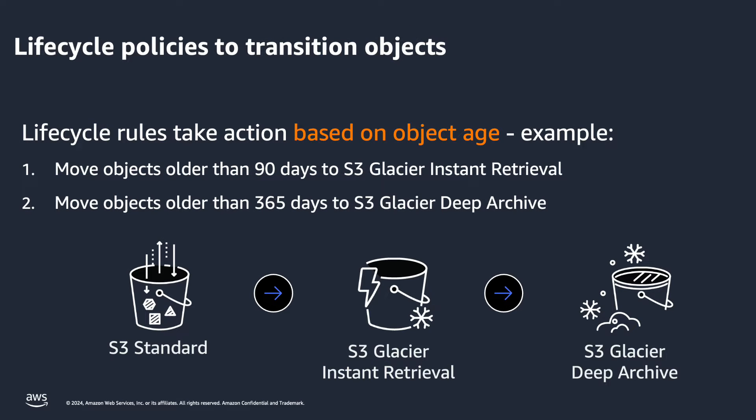In this example, we have a workload where objects are accessed several times a month for the first 3 months, and then not as much. After 90 days, we only see access around once per quarter, and then after 365 days, we only need it for retention purposes.